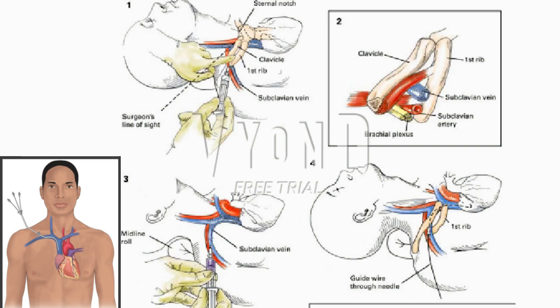The patient is placed in the supine position and the arms are tucked at each side. Fluoroscopy should be available. The hair is removed with clippers. Each side of the neck and upper thorax are prepped and draped using the maximum sterile barrier technique.